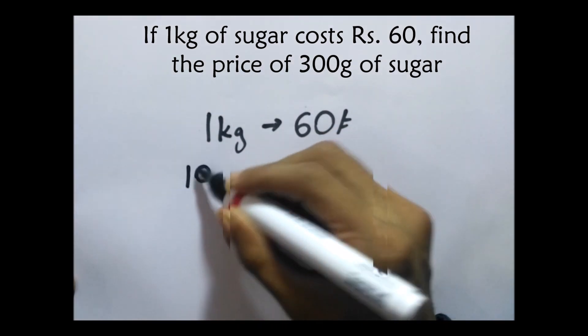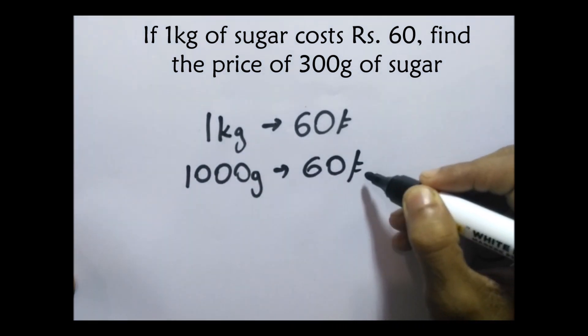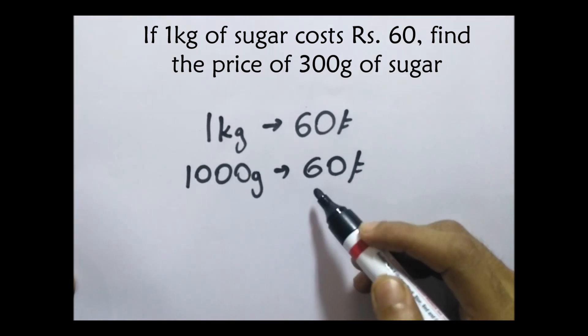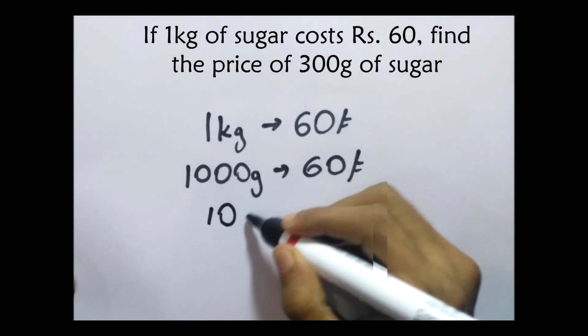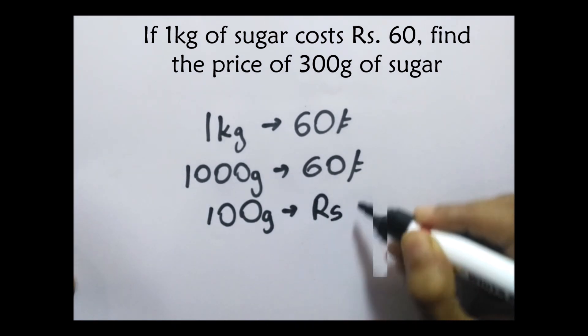one kilogram means in grams it's a thousand grams. That means a thousand grams costs 60 rupees. Now we can see 10 is a common factor so we can cancel one zero from both sides. That means 100 grams costs just 6 rupees.